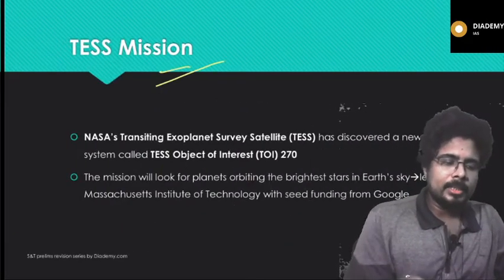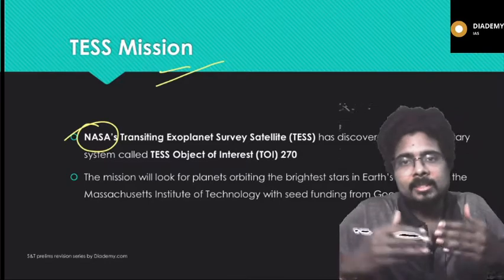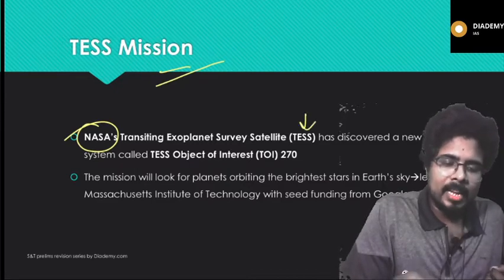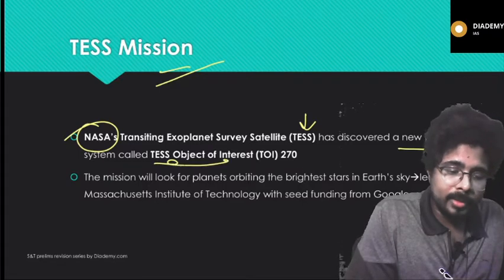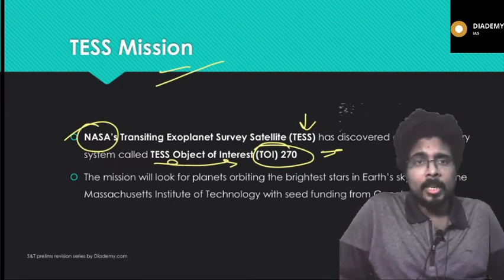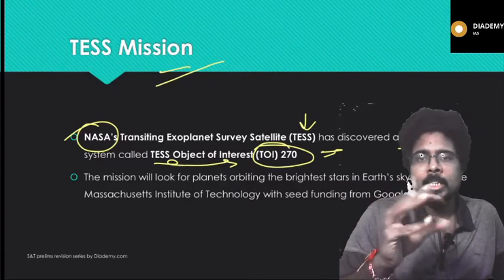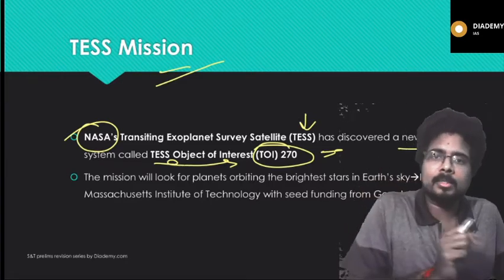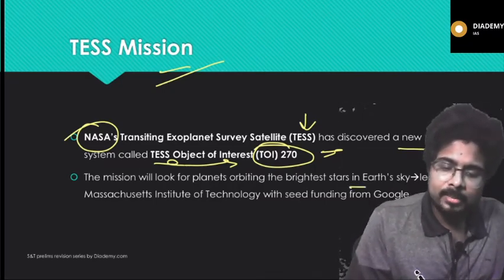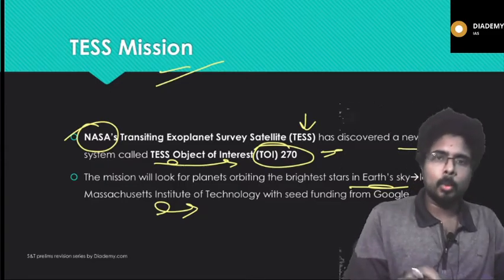Next, the TESS mission. TESS is a mission of NASA used to explore exoplanets — that is, Earth-like planets in the galaxy. NASA's Transiting Exoplanet Survey Satellite TESS has discovered a new planetary system called TESS Object of Interest TOI-270. It is a new planetary system discovered by TESS. The mission will look for planets orbiting the brightest stars in Earth's sky. It is led by the Massachusetts Institute of Technology and funded by Google.